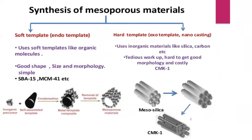Synthesis of mesoporous materials includes the soft template method, also called the endotemplate method, and the hard template method, also called the exotemplate or nanocasting method. Soft templates use organic molecules and offer good shape, size, and morphology control, and are simple. Examples include SBA-15 and MCM-41. Hard templates use inorganic materials like silica and carbon, but involve tedious workup, are hard to achieve good morphology, and are expensive. An example is CMK-1.